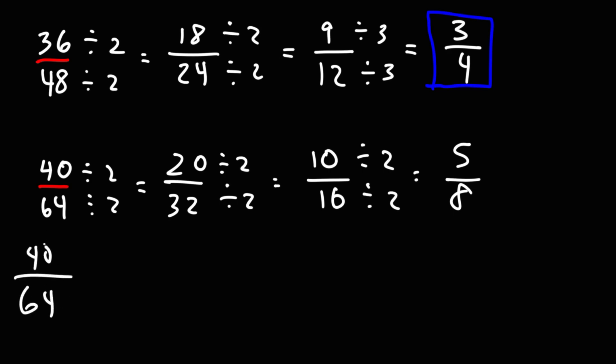If you recognize the fact that 40 and 64 are multiples of 8, from the beginning you could just divide it by 8. And that will give you the answer directly. But if you weren't aware of that fact, if both numbers are even you could just divide by 2.